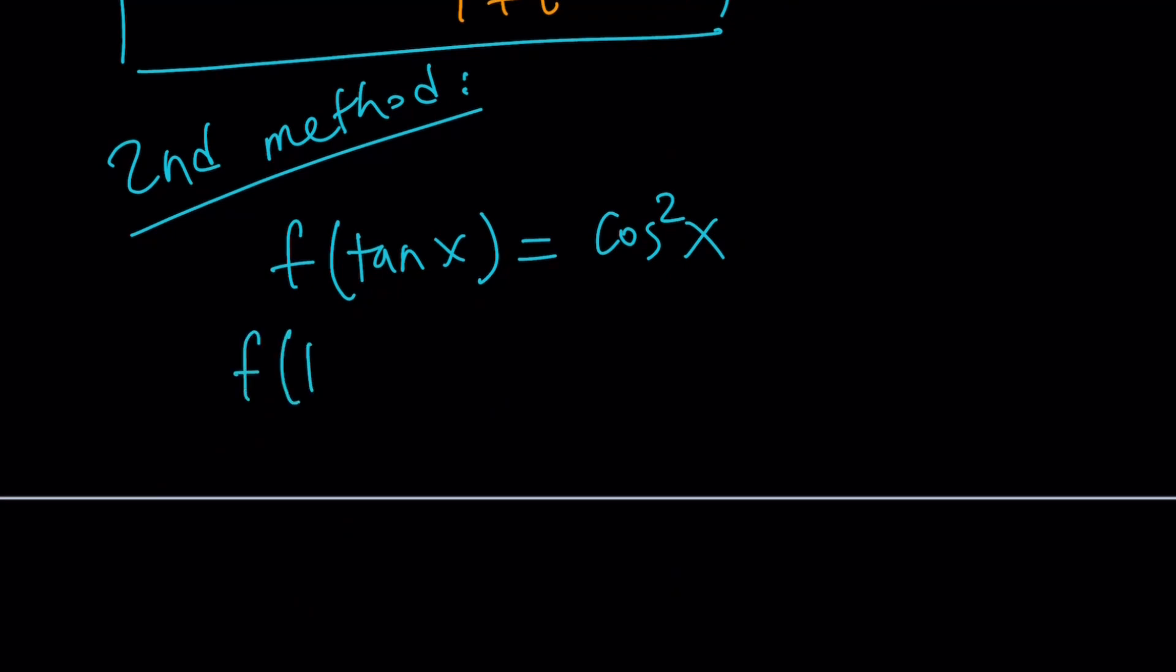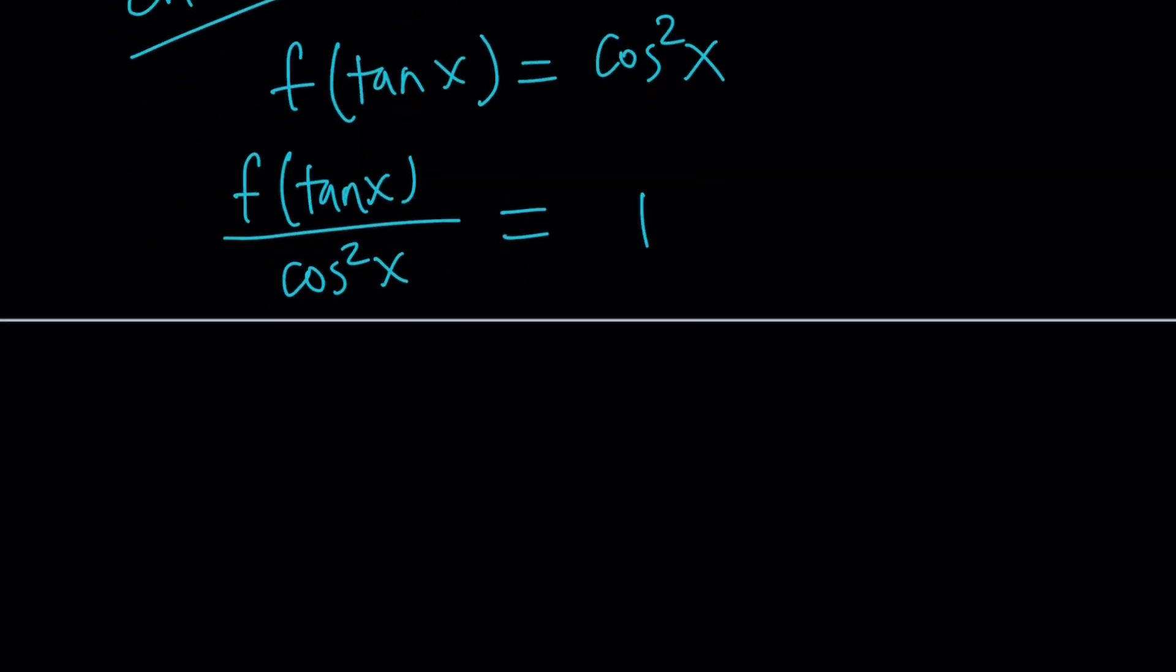We notice one thing here. If you take tangent, that's our argument, square it and add 1, you get the reciprocal of cosine. But, you can also get that in a different way, which is calculus. Wow, that's interesting, right? To solve a functional equation problem. Anyways, I'm going to divide both sides by cosine squared. And, of course, this is going to be 1 as long as cosine squared does not equal 0.